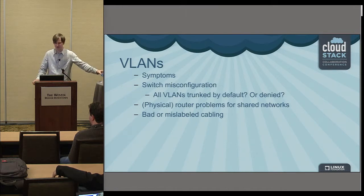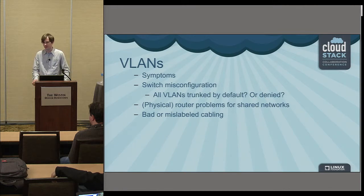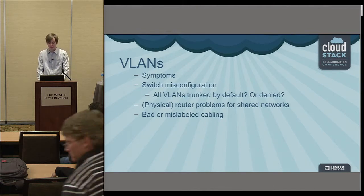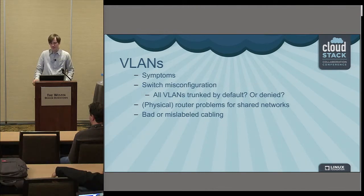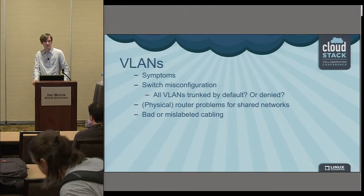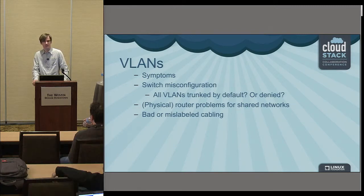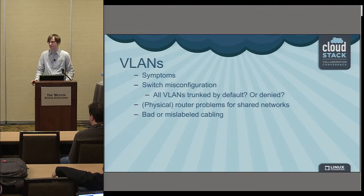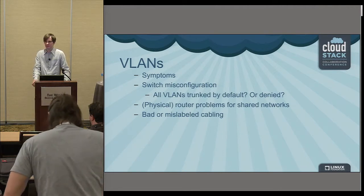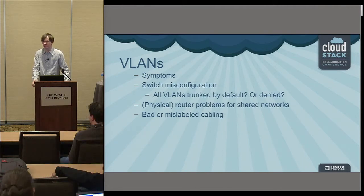Probably the most common cause is just some kind of switch misconfiguration. So check the switch, check the documentation, and make sure the host is plugged into the right switch port. You can also have other weird problems like cabling. For shared networks, since it's the physical router handling the traffic instead of the CloudStack managed virtual router, you can have configuration problems on the router itself — like the router not listening on certain VLANs.